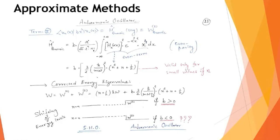We must be careful using this equation for very large values of n, because the correction term grows as n², and for large n it could exceed the unperturbed energy W₀. The philosophy of perturbation theory requires that the perturbation energy must be much smaller than the unperturbed energy, so this equation is valid only for small values of n.